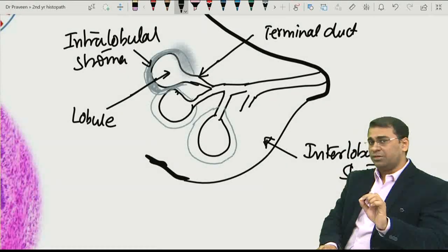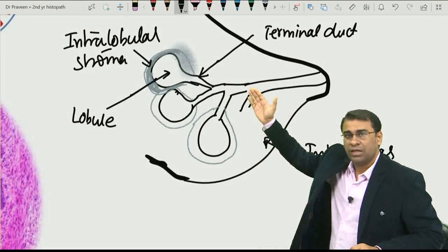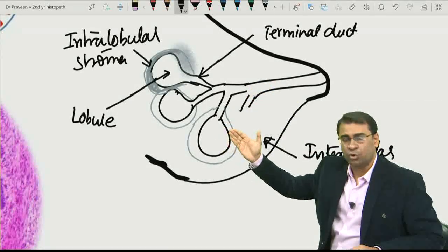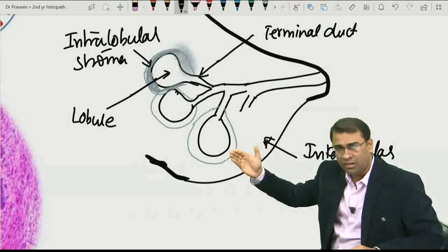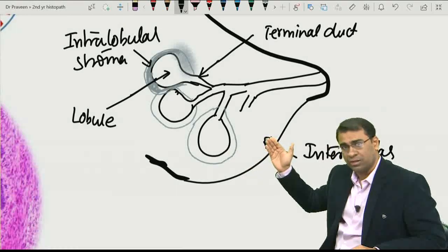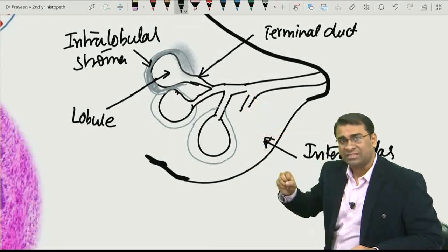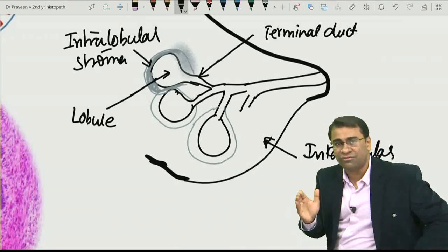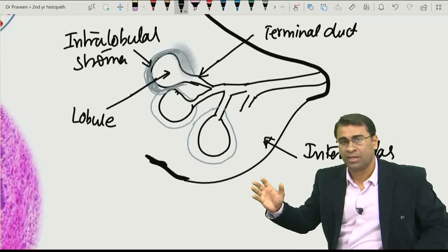When you know this anatomy, now understand, the tumour can come from these ducts, the tumour can come from these lobules, or the tumour can come from this intralobular stroma. In fact, the tumour can also come from this interlobular stroma. When a tumour comes from these ducts, and it is invasive, you call this invasive ductal carcinoma, or invasive lobular carcinoma.